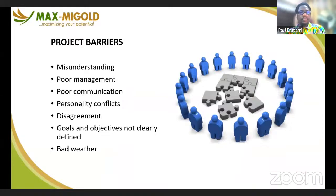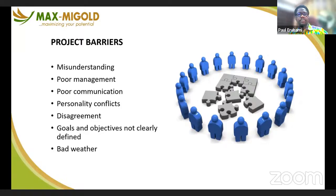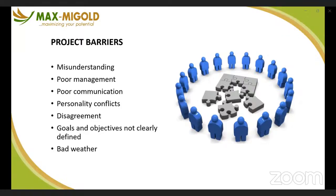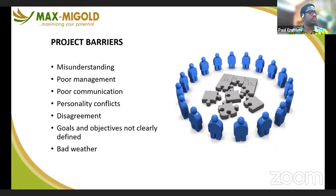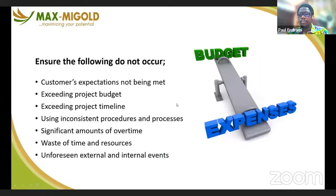If you have poor communication associated with the project, the project will suffer. Once you also have personality conflict in the project — where people begin to have issues with ego — the project will also suffer. Disagreement is a very strong issue that normally affects projects. As the good book says, can two work together without them agreeing? If there is disagreement, the project goes nowhere. Goals and objectives not clearly defined, and also bad weather, can normally affect the project.